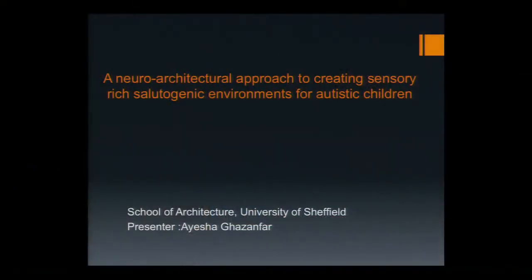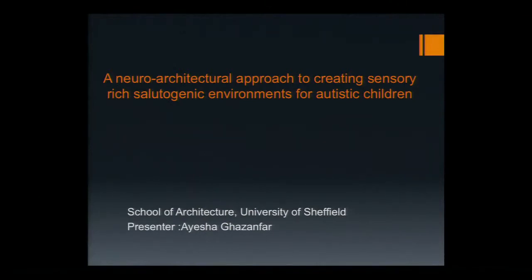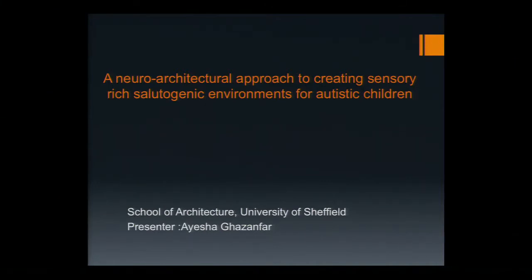If we start with the environment, we want to see what exactly does the environment do to ourselves in terms of our brain and in terms of our behavior. My main subject here is the autistic child. I've been working within this field, within this population group, for a long time. My interest is basically based on how they are different and why they are different in terms of their brain and in terms of behavior as well.